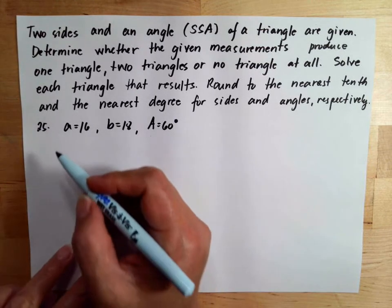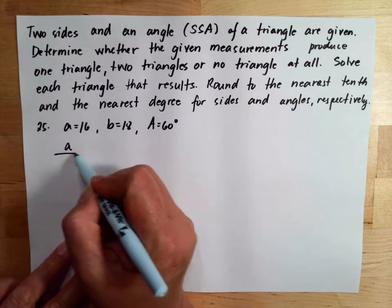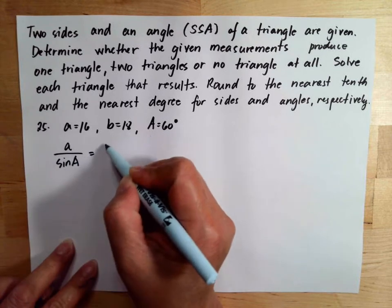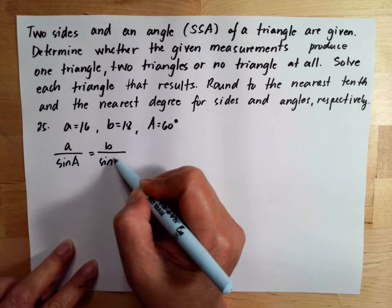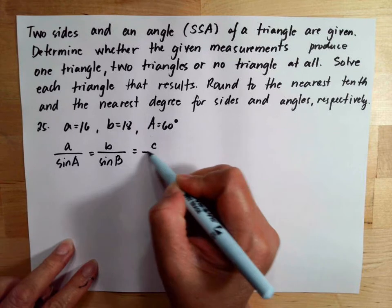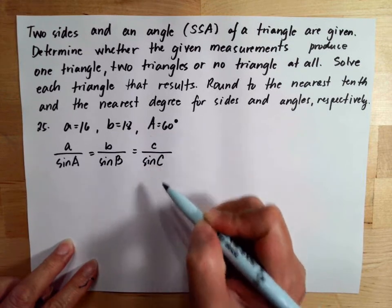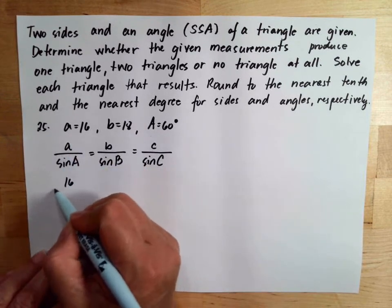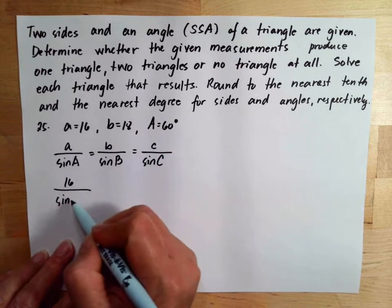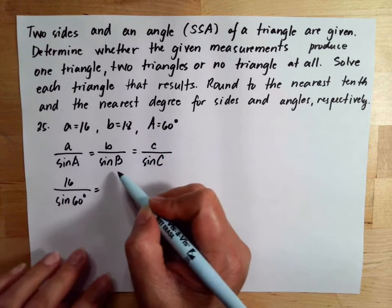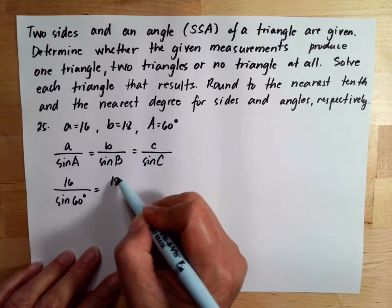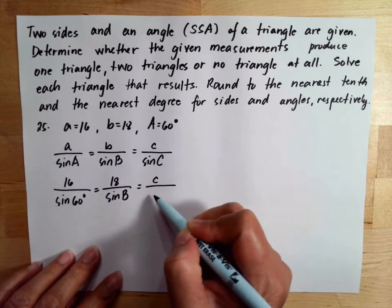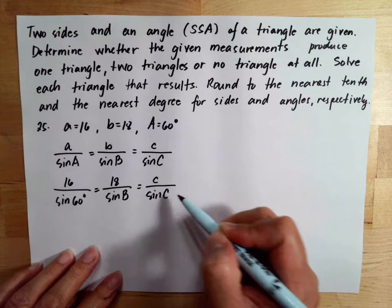We will use the Law of Sines: side a over sine angle A equals b over sine angle B equals side c over sine angle C. Our given is side a and angle A, so side b, angle B, side c, and angle C are unknown.